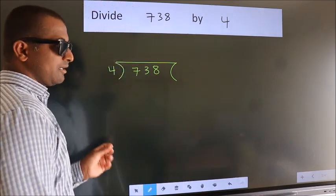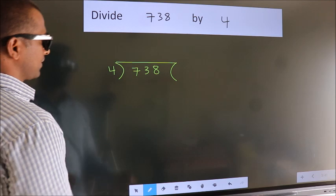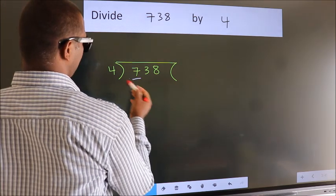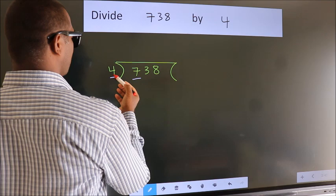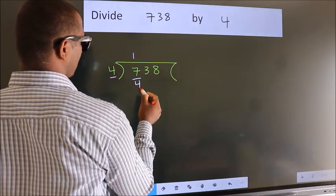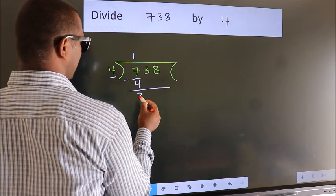This is your step 1. Next, here we have 7, here 4. A number close to 7 in the 4 table is 4 once 4. Now we should subtract. We get 3.